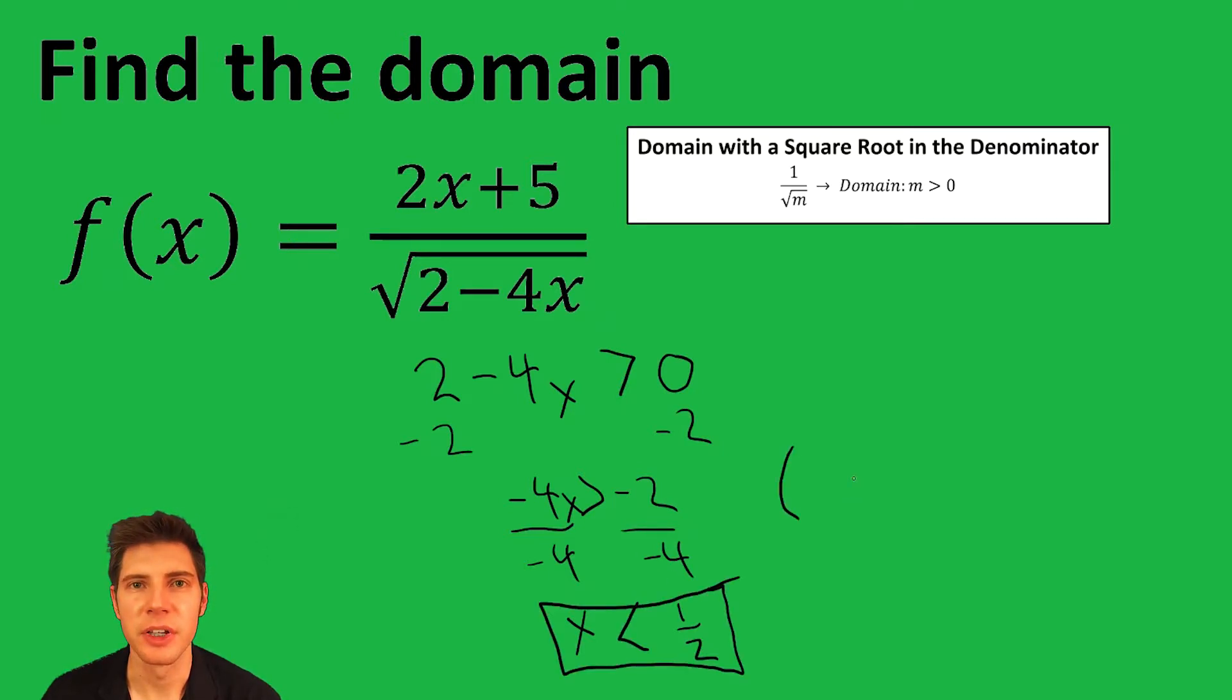Another way you could write it would be in this notation where you say negative infinity comma 1 half. And you want to use parenthesis here because it does not include the 1 half. So I hope this makes sense.